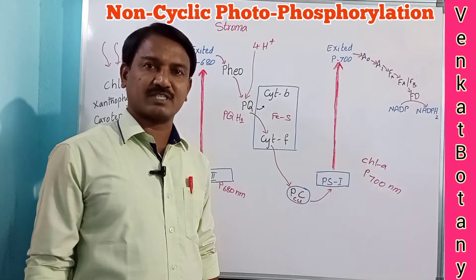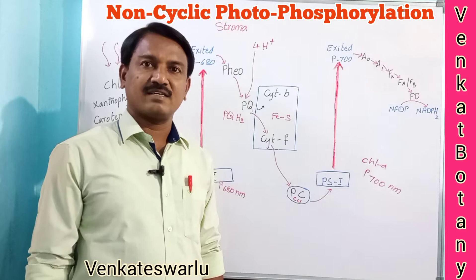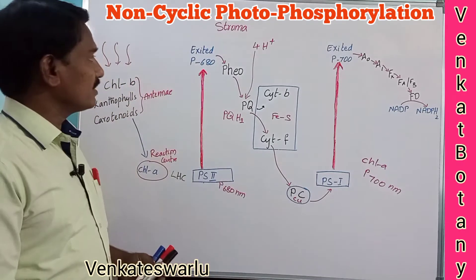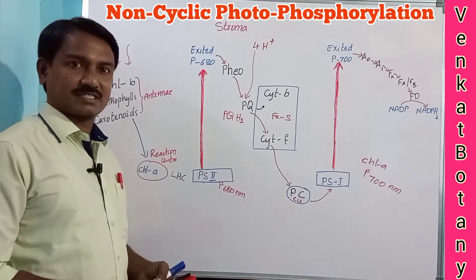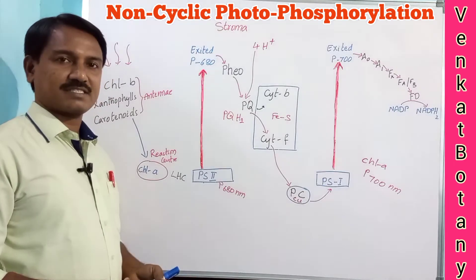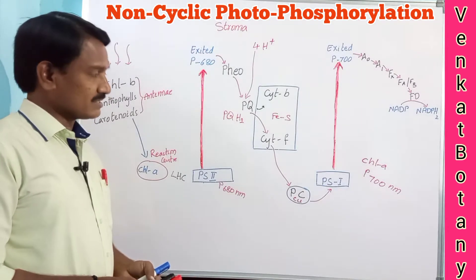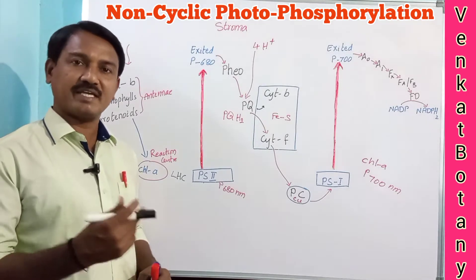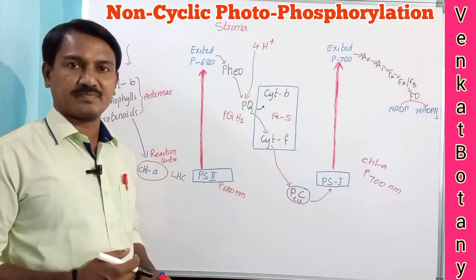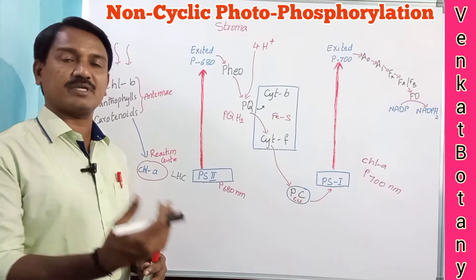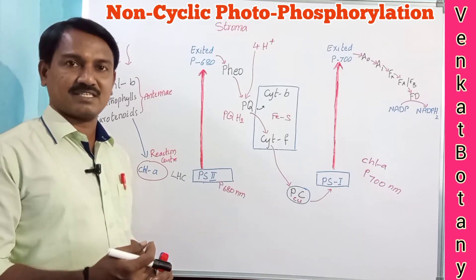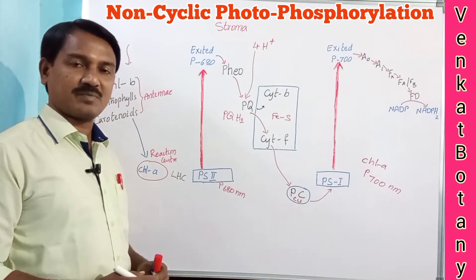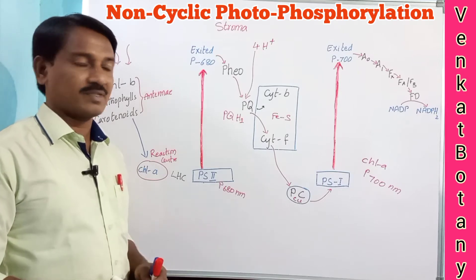In the topic of photosynthesis, we are discussing the electron transport system. In our previous video, we discussed the structure of chloroplast and light reactions. The result of light reactions is the preparation of assimilatory power in the form of ATP and NADPH2. These are formed in the electron transport system, which may be non-cyclic or cyclic.